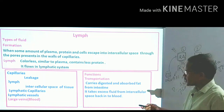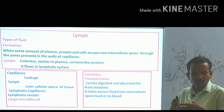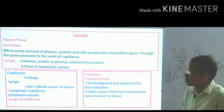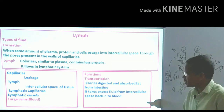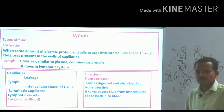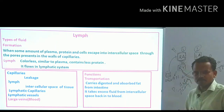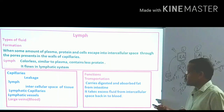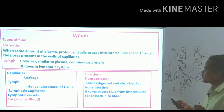When leakage occurs from capillaries, the lymph reaches the intercellular space of tissues. It is then collected by lymphatic capillaries, then into lymphatic vessels, and finally returned to the circulatory system through large veins in the blood. The functions of lymph are: first, it carries digested and absorbed fat from the intestine; second, it collects excess fluid from the intercellular space.